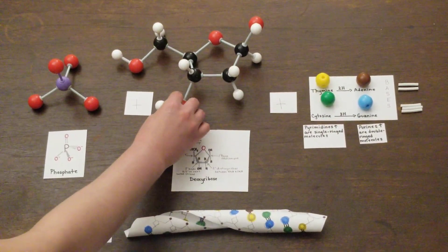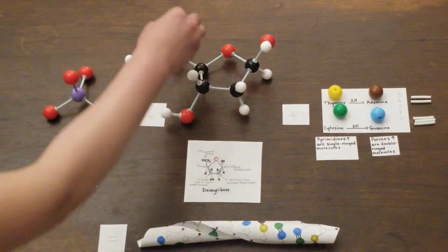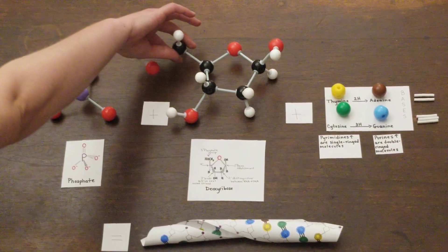Carbon 3 is where the 5' of the next phosphate will bind. And here is the phosphate group, 5'.